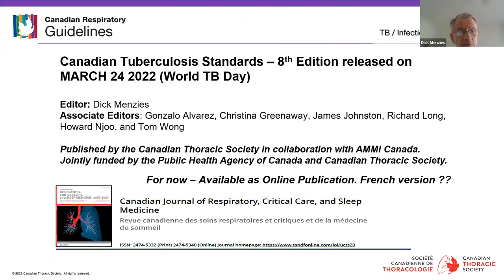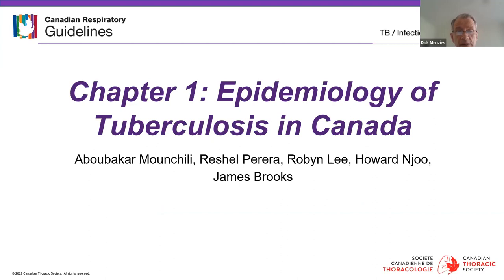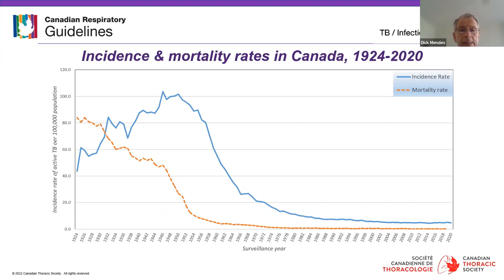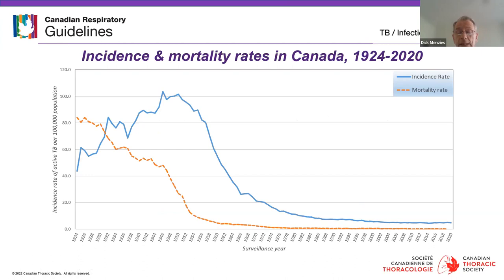It would be remiss not to mention the epidemiology of TB in Canada. The incidence rate looks good compared to the 1920s, but before we congratulate ourselves too much, it's striking how flat the curve is in terms of incidence rate over the last 20 to 30 years. In fact, the actual number of persons notified with active TB has actually increased in the last three years relative to ten years ago. The trend is clearly not one of elimination.